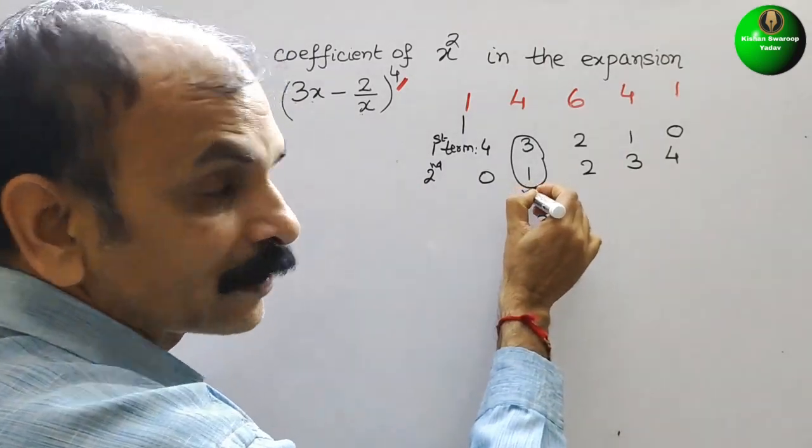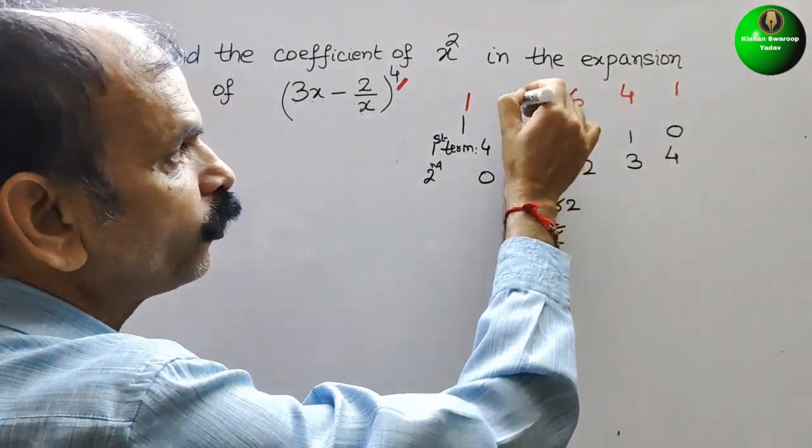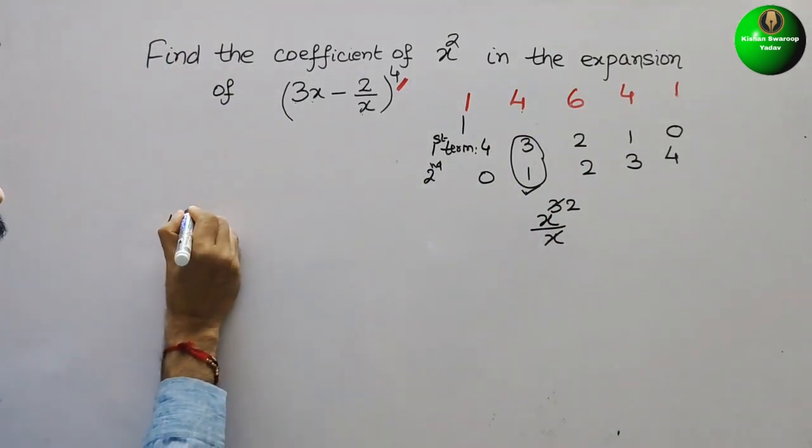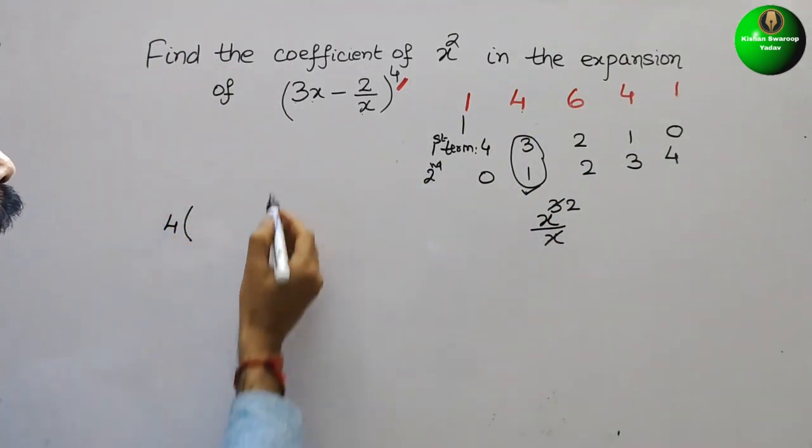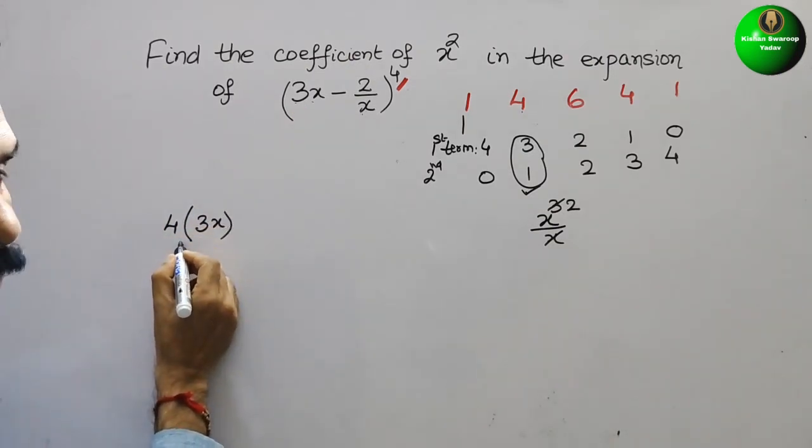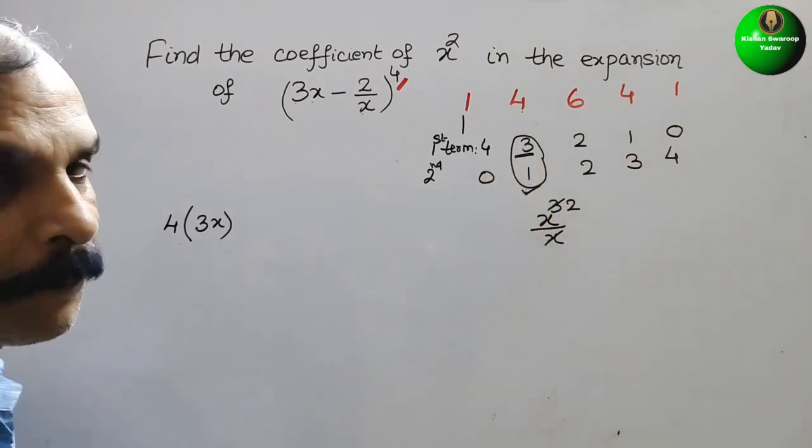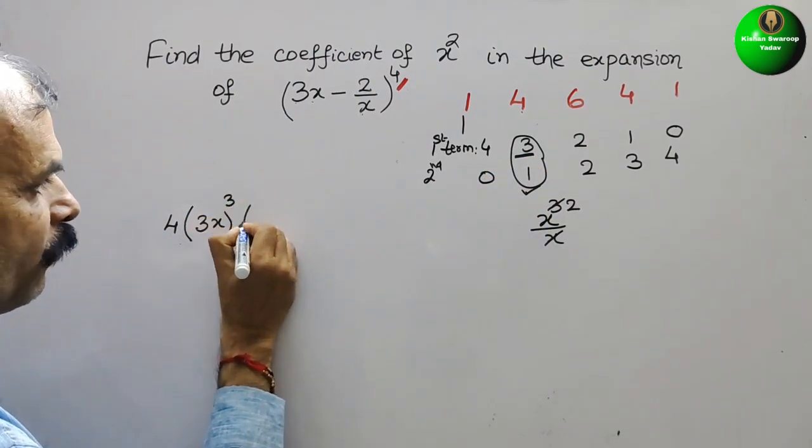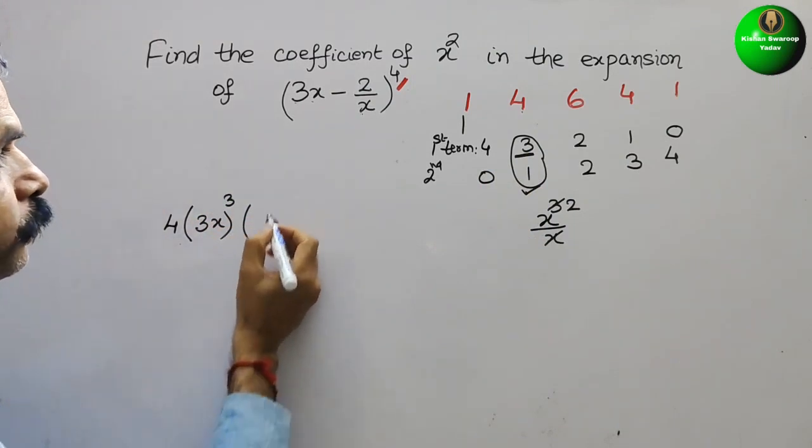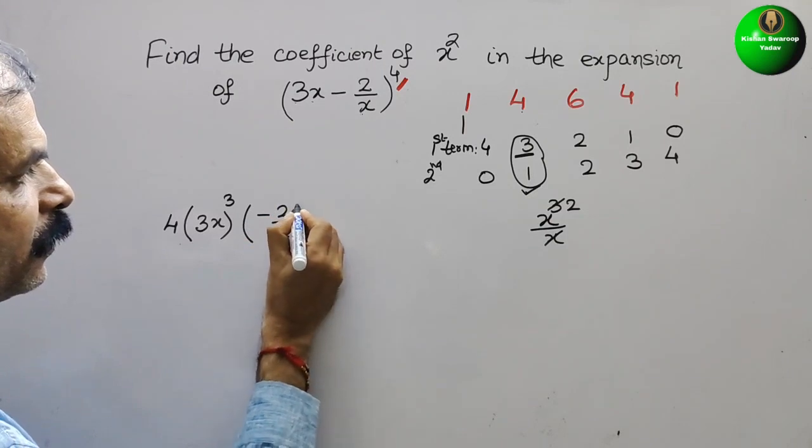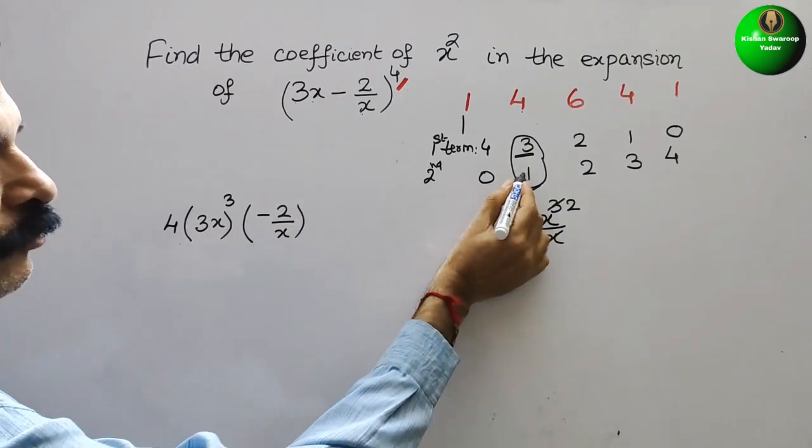For this, the initial coefficient is 4. We will write for first term: first term is 3x and for the 3x, the power is 3 now. And for the second term, that is minus 2 by x, the power is 1 only.